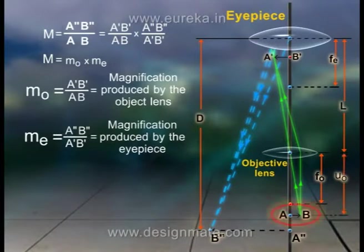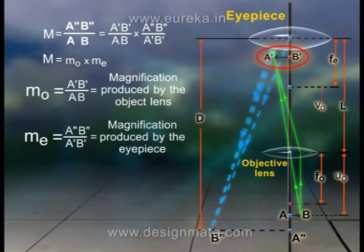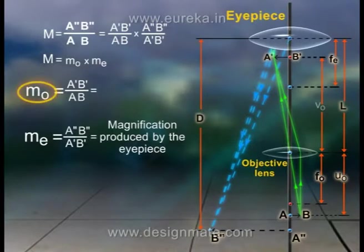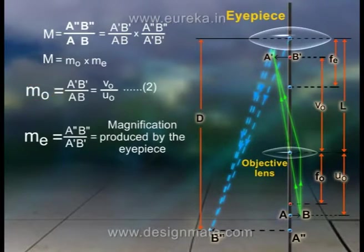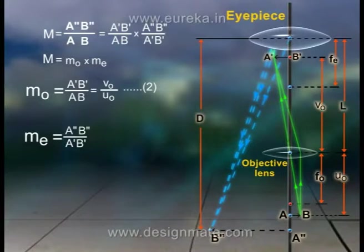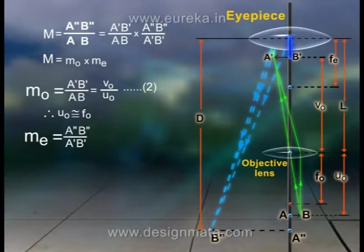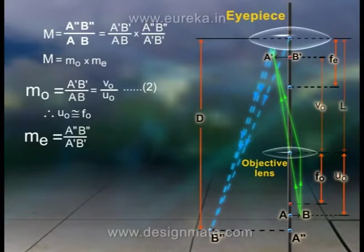Now, if UO is the distance of the object AB from the objective lens, and VO is the distance of the image A'B' from the objective lens, then magnification MO = VO / UO. In practice, the object AB is placed just outside the focus of the objective lens, so distance UO is nearly equal to FO. And since the focal length of the eye lens is small, the distance of the image A'B' from the objective lens is nearly equal to the length of the microscope tube, so VO is nearly equal to L.